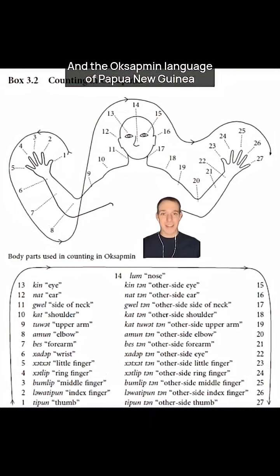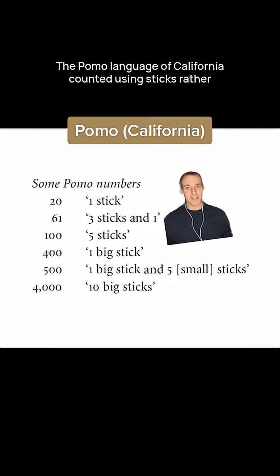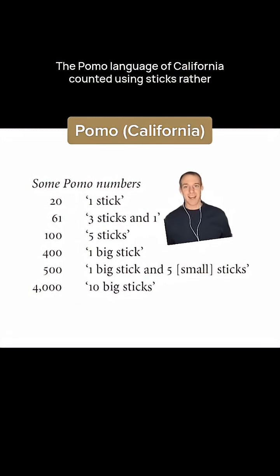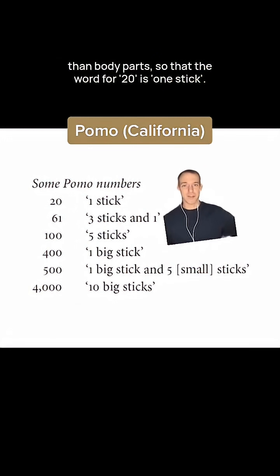The Oksapmin language of Papua New Guinea has a base 27 counting system that works like this. The Pomo language of California counted using sticks rather than body parts, so that the word for 20 is 'one stick.'